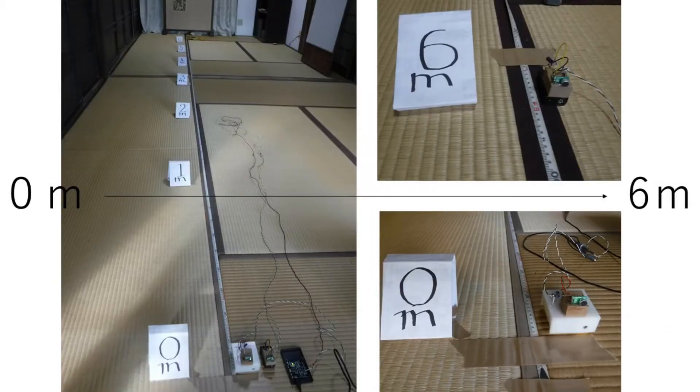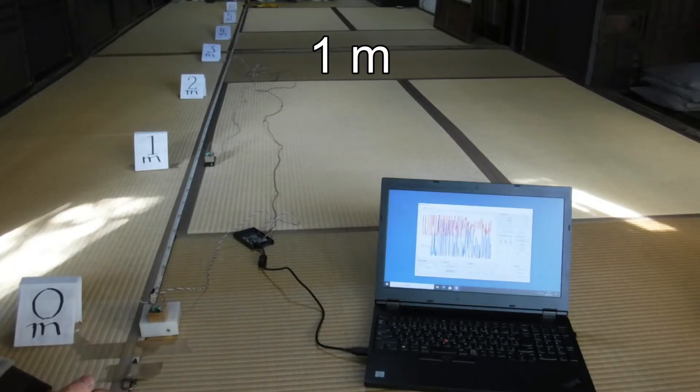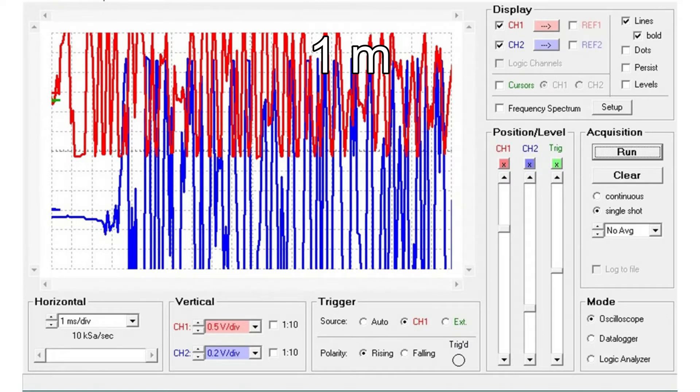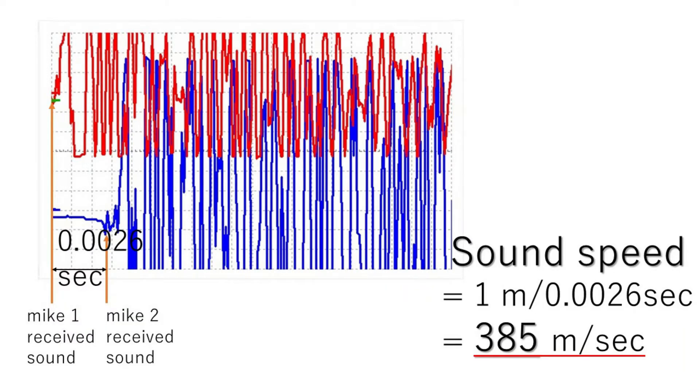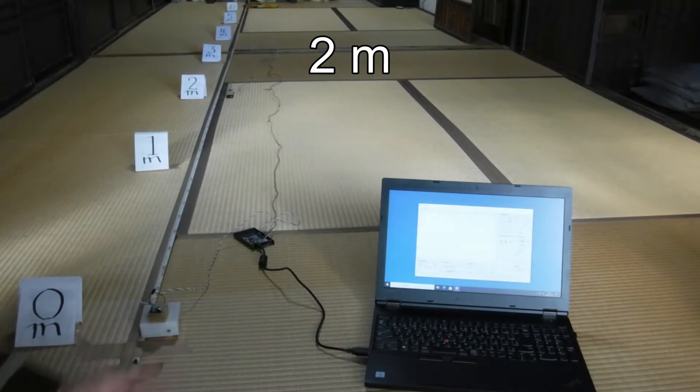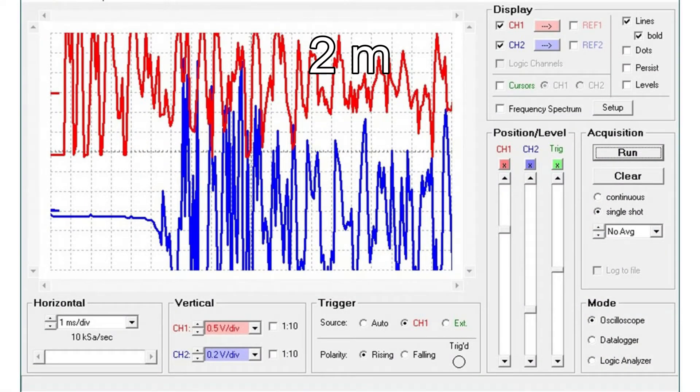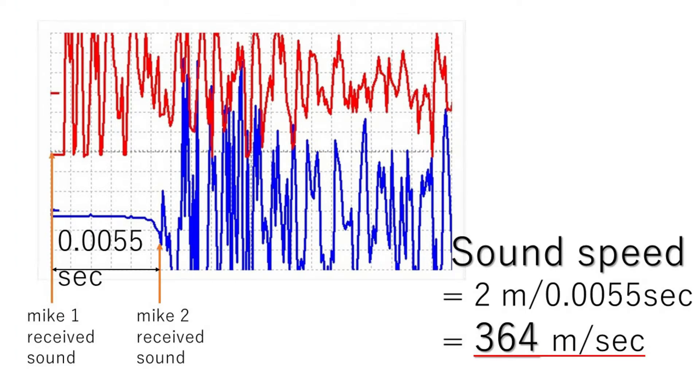Let's continue to measure by changing the distance between the two microphones. The measurement result at one meter is 385 meters per second. This is the measurement result at two meters.